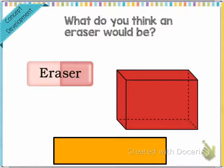Hi guys, Miss Davis here. Today we're going to be talking about Module 5, Lesson 3, and in this lesson we're going to be finding and naming 3D shapes. The 3D shapes that we have been focusing on are cone, cube, sphere, cylinder, and rectangular prism.